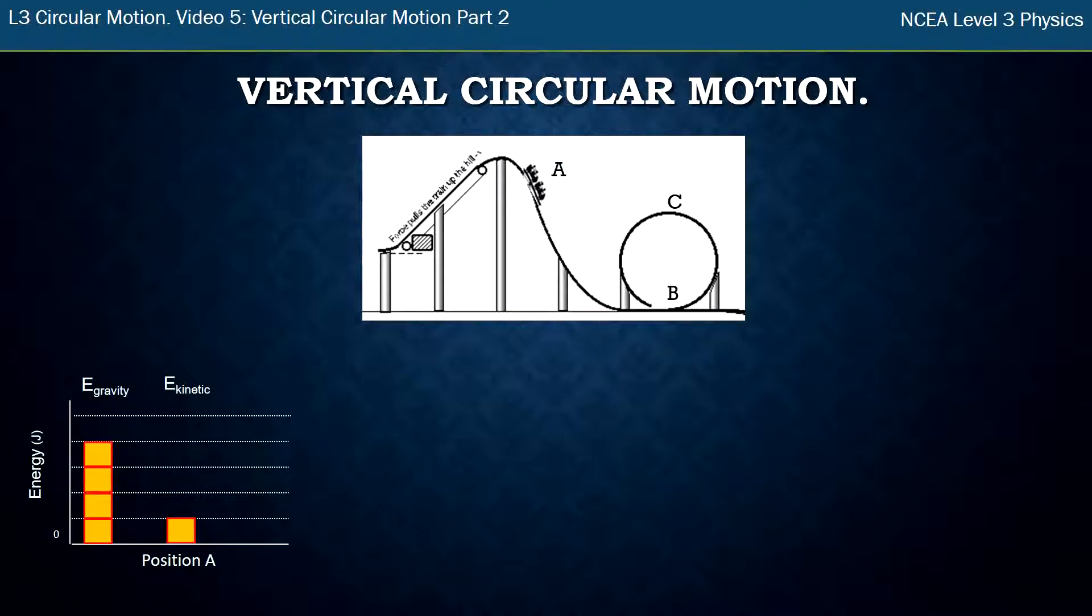At position B, when it gets to the bottom there, it no longer has any gravitational energy because it's at its lowest point, and all of that gravitational energy has been converted into kinetic energy. The important thing with the energy bar charts is that the total remains the same, so you can see now there's five bars of kinetic energy.